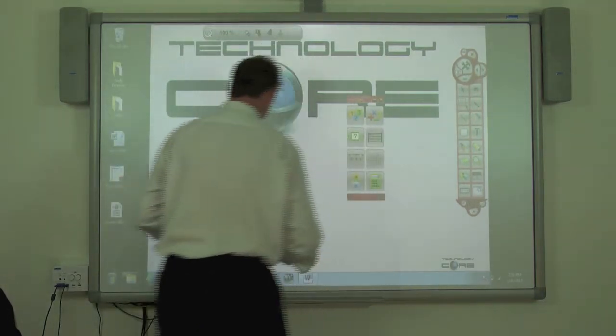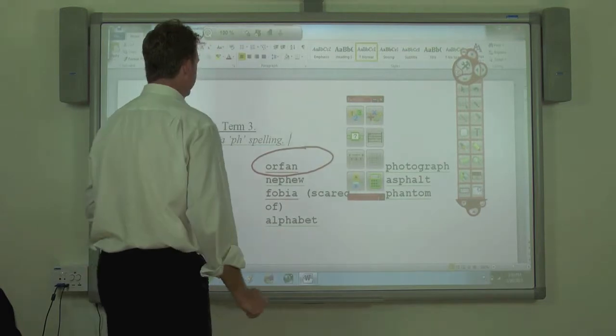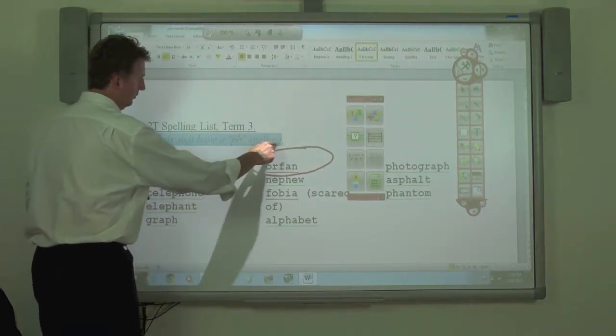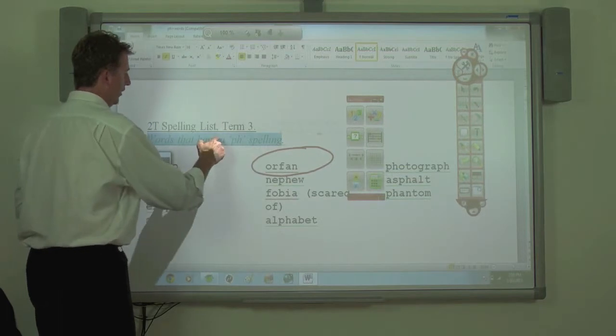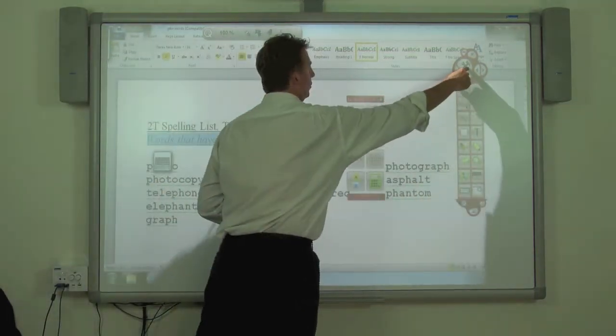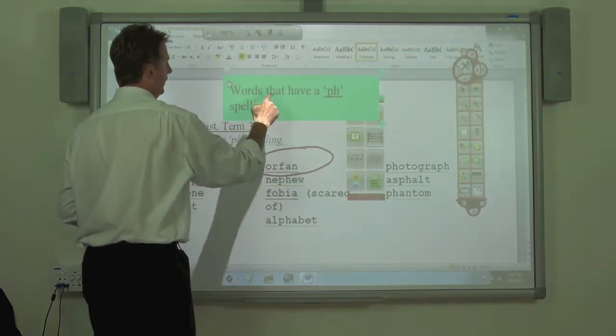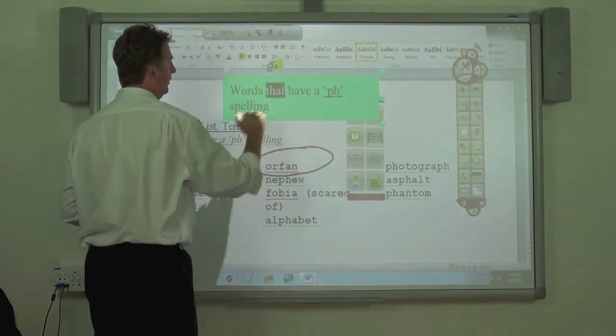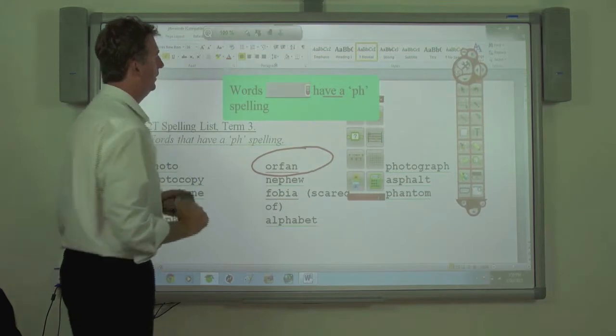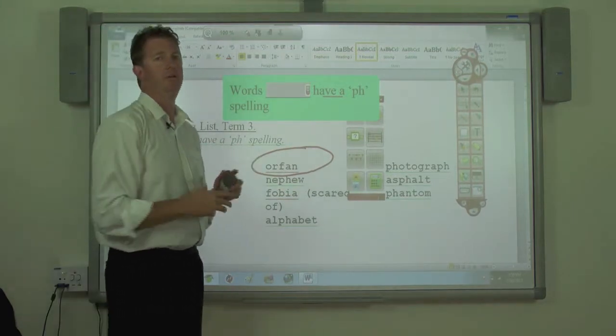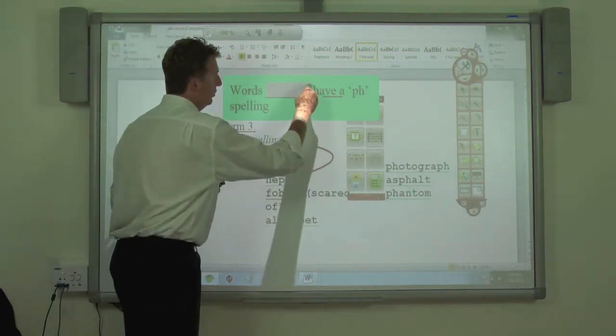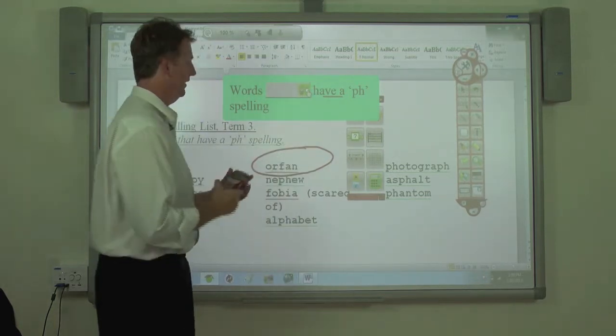The other thing that you can do is do a close activity. This is just a spelling one, but we'll just use the text here. If I grab that text and put that into WizTeach, what I can do is highlight a word, put it into my vault, and because my Quizdom dongle is plugged in, my handset will come up. So I can then send that out again.